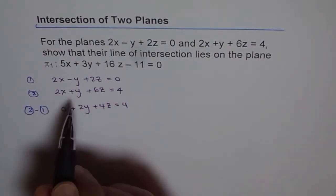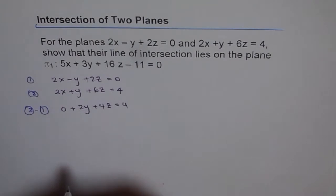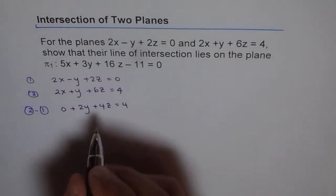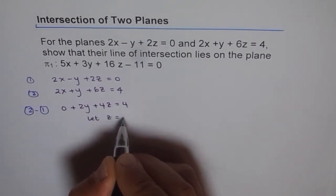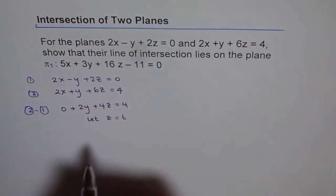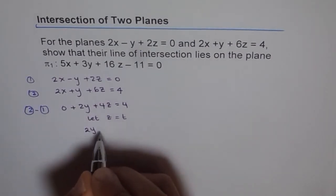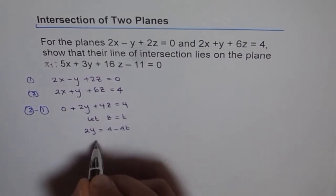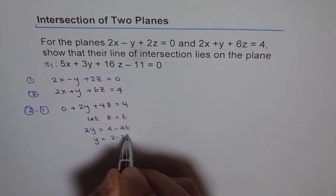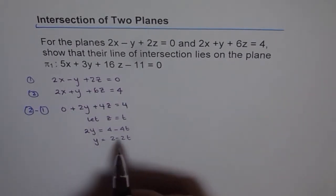So I have got two equations and three variables, and I cannot really solve for each without using a parameter. So let z equals to t. That gives me 2y equals to 4 minus 4t, or y equals to 2 minus 2t. So I got the value of z and the value of y, both in terms of t.